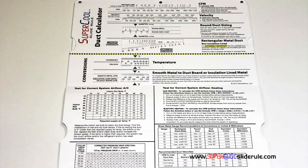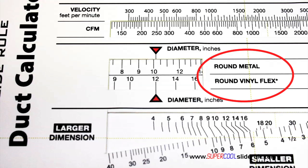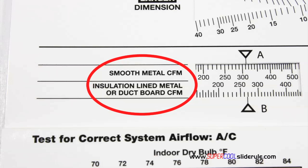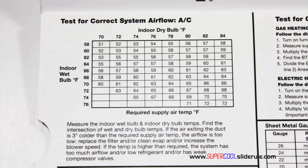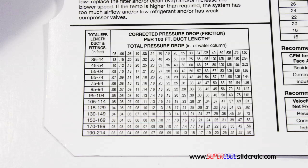Inside is packed with even more information. It performs sizing of both metal and flexible duct. It has the only direct reading conversion from smooth metal to insulation-lined metal we've ever seen. The majority of technicians have never been taught that if the insulation is on the inside of the ductwork, you cannot size it with a regular duct calculator. It also has step-by-step directions for determining airflow through a gas furnace, electric furnace, or an air conditioning unit, plus pressure drop multipliers for ductwork as well as recommended velocities.